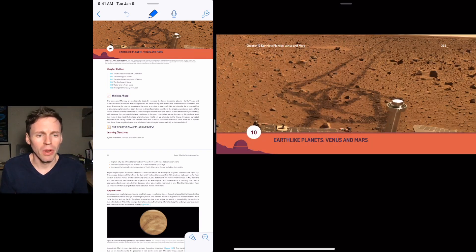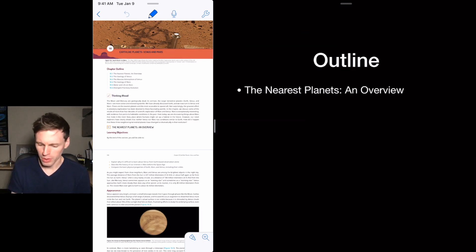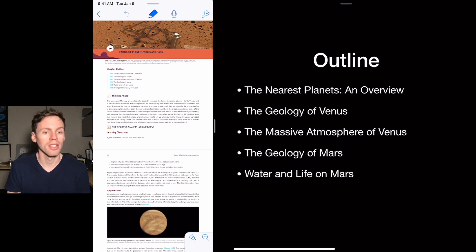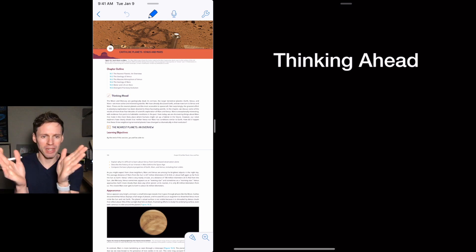Venus and Mars, comparing them to Earth. So we want to talk about the nearest planets to us, Venus and Mars. They are on opposite sides of Earth. Talk about the geology of Venus, the atmosphere of Venus, the geology of Mars, and the prospect of water and life on Mars. And then the divergent planetary evolution, why they are so different from us.